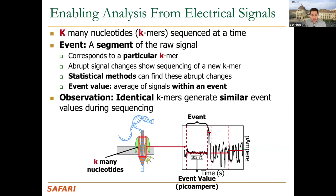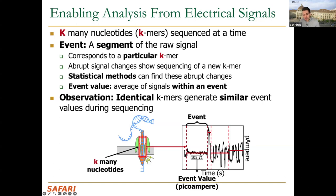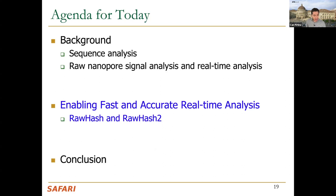A key observation: when sequencing identical k-mers at different times, the electrical signals generated are not exactly the same — you won't always get exactly 105 picoamperes — but they will be similar. For example, sequencing ACTGG might yield 106, 107, or 104 at different times. These values are close to each other, which is a crucial observation for the Raw Hash approach.